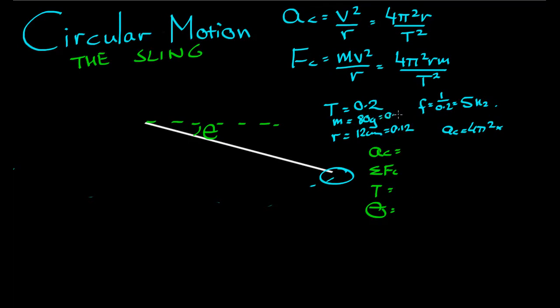So r is 0.12. Whilst we're here, we'll change the mass to kilograms. So 4π² times r, 0.12 divided by T², so 0.2 squared, comes to a total of 118.4 meters per second squared. Let's check that. Yeah, 118.4 meters per second squared. In which direction?